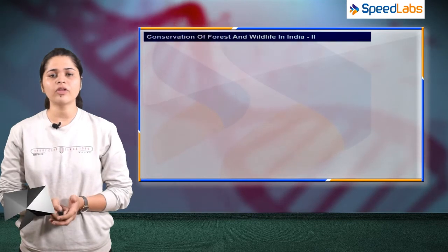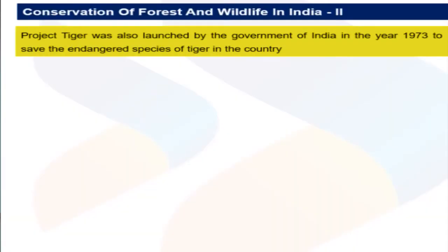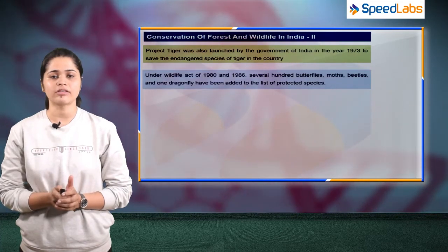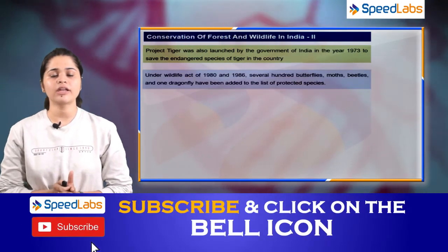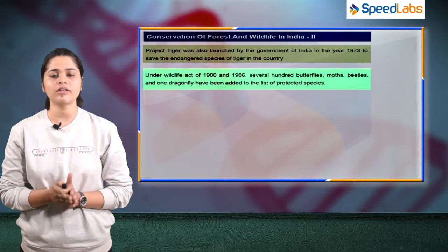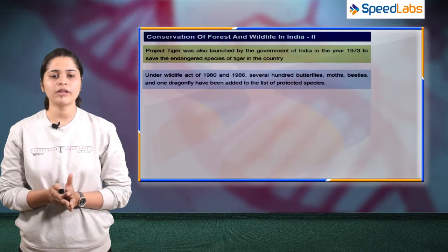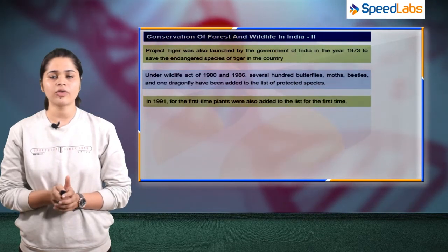Project Tiger was launched by the Government of India in 1973 to save the endangered tiger species. Similarly, under the Wildlife Act of 1980 and 1986, several hundred butterflies, moths, beetles, and one dragonfly species were added to the list of protected species. For the first time in 1981, plants were also added to this list.